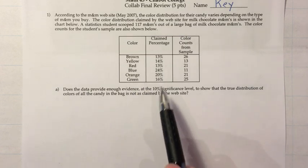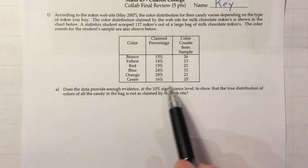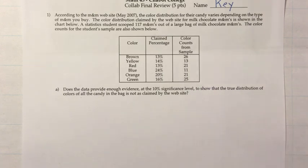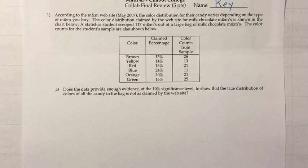So we've got the different colors, the percentages claimed by the website, and then the counts from the student sample. They want us to answer: does the data provide enough evidence at the 10% significance level to show that the true distribution of colors of all the candy in the bag is not as claimed by the website? We're treating this bag as our population and this scoop as our random sample. That sounds like a hypothesis test.